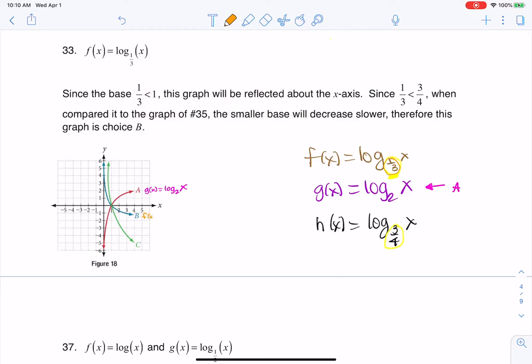So this right here, since this is decreasing at a slower rate, this is going to be log base one-third of x, all right? So this is going to be graph B.